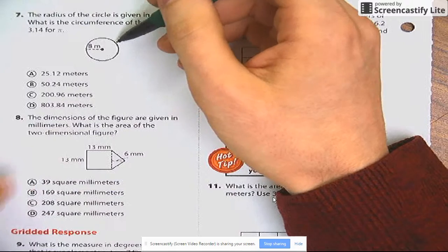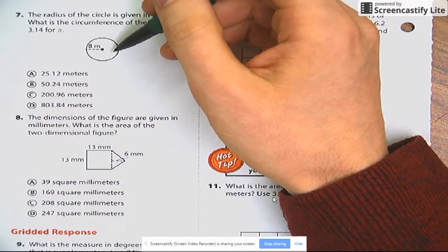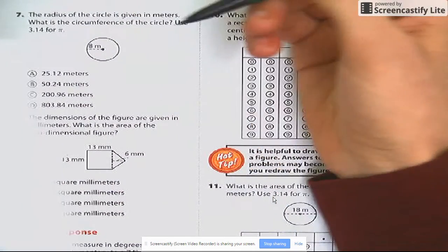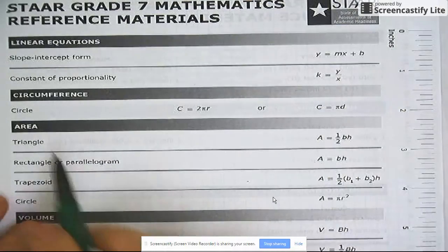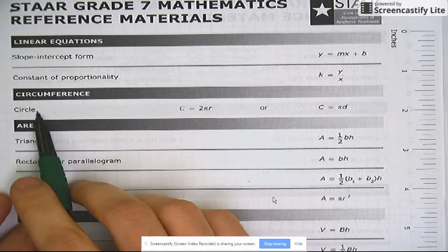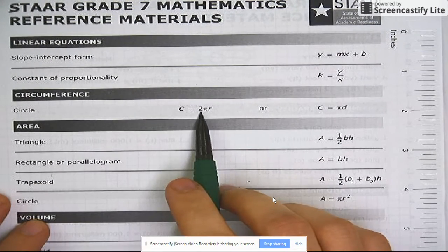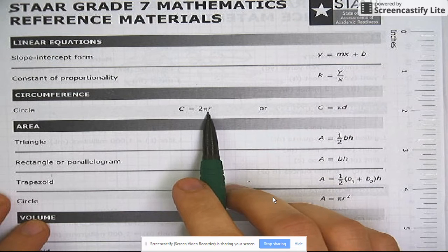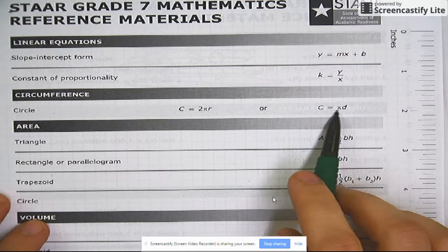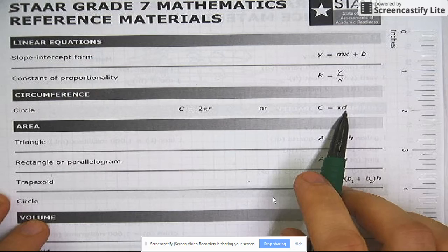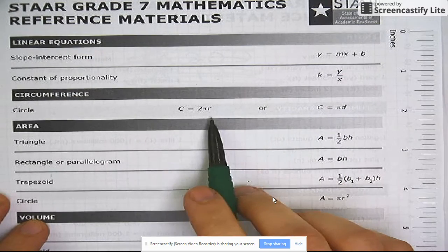Ah, man, I forget how to do this. Well, that's okay. Let's take a look at our STAAR reference material sheet. Circumference of a circle is... Circumference is 2 times pi times r, or pi times diameter. Depends on whether you're given the diameter or the radius, and we're given the radius.